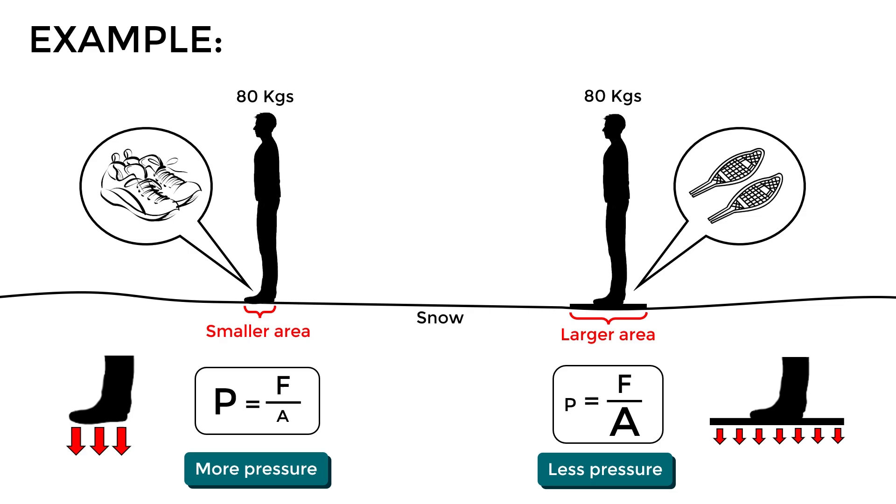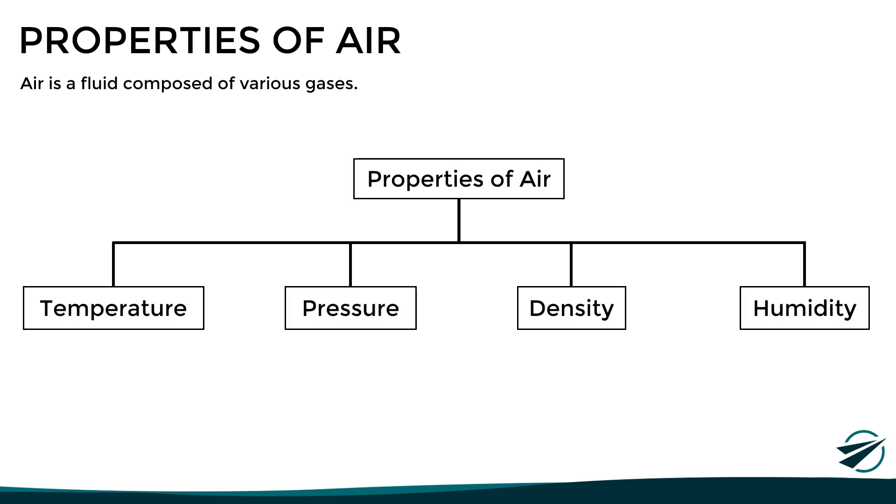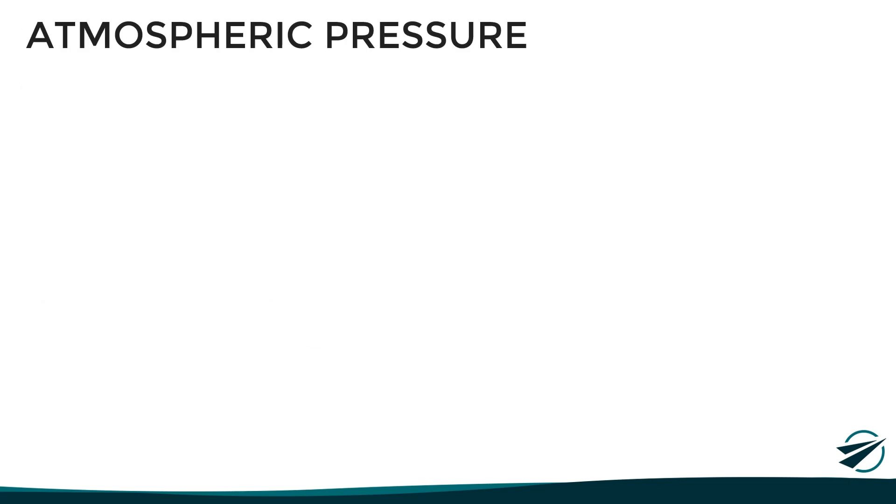So, now that we have seen the general concept of pressure, let's move on to atmospheric pressure. But first, let's remember the main properties of air. As we said in a previous video, air is a fluid composed of various gases, and its main properties are temperature, pressure, density, and humidity. And although in this video we will focus on the pressure, we have to say that all these variables are directly related to each other. So, with that being said, let's see what is atmospheric pressure.